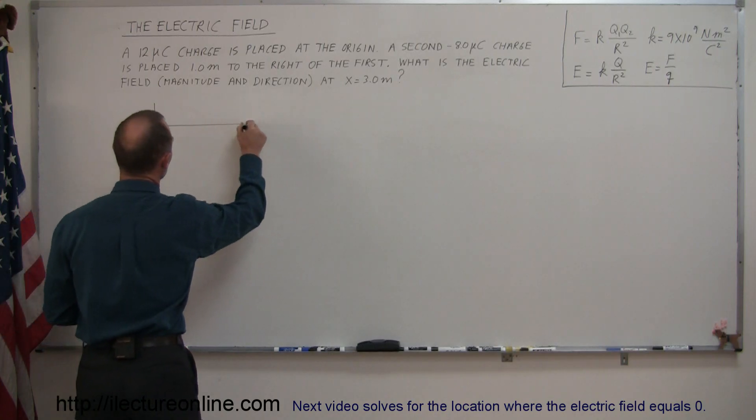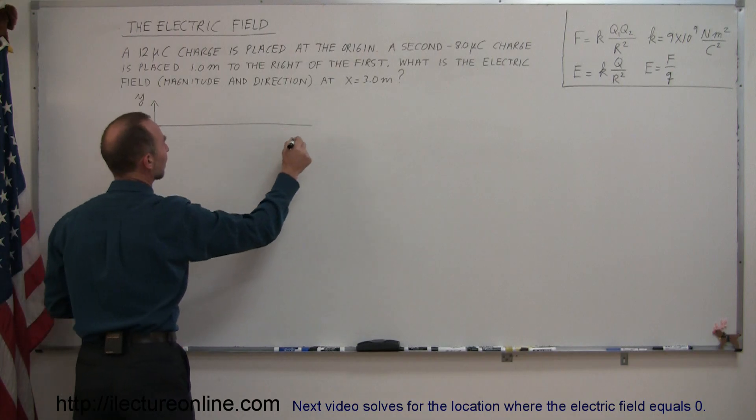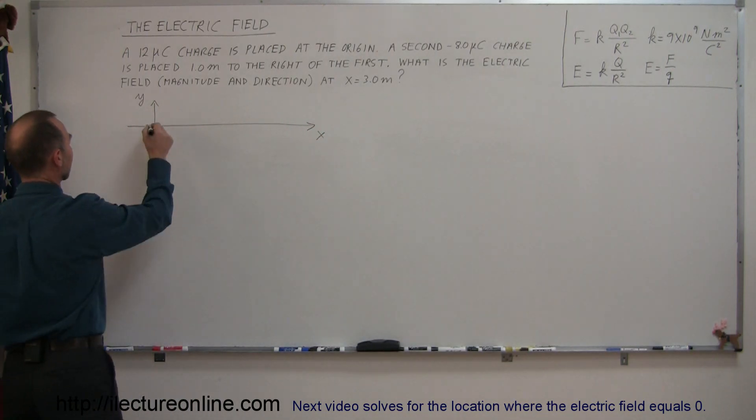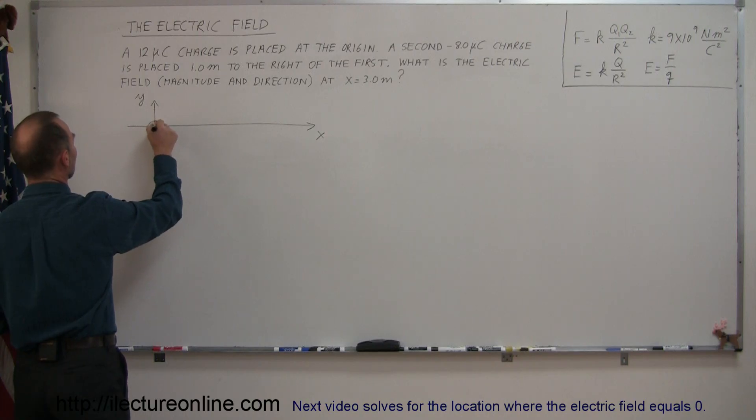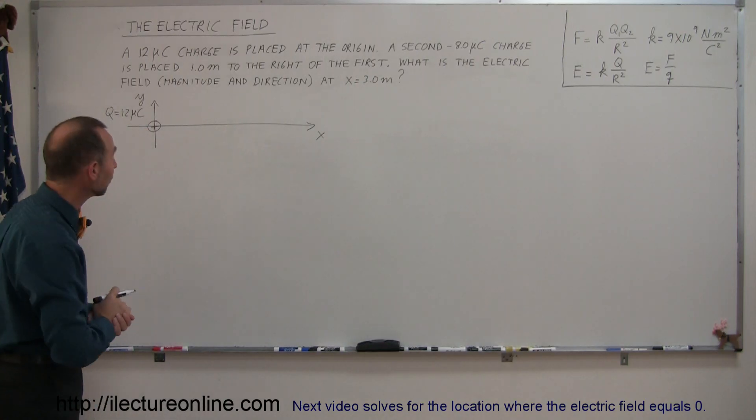Let's draw an x-y axis. Since everything is on the x-axis, we'll draw a short y-axis. Here's our x-axis. Let's put the two charges on there. We have the first charge, which is positive. Let's call that q1 equal to 12 microcoulombs.